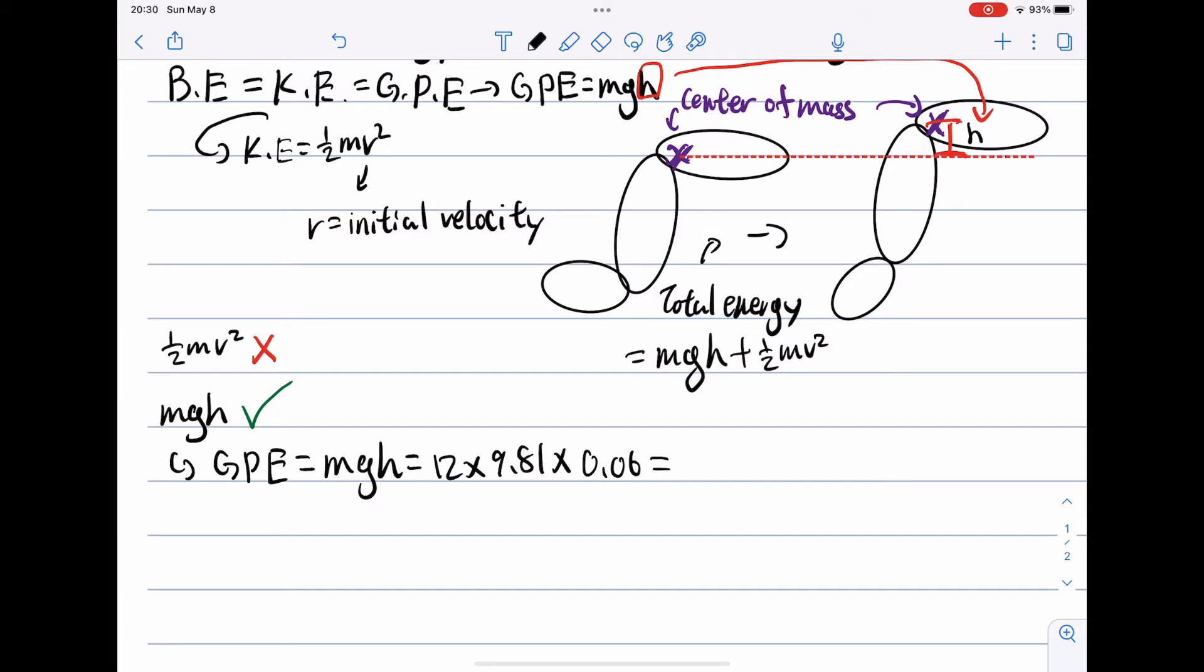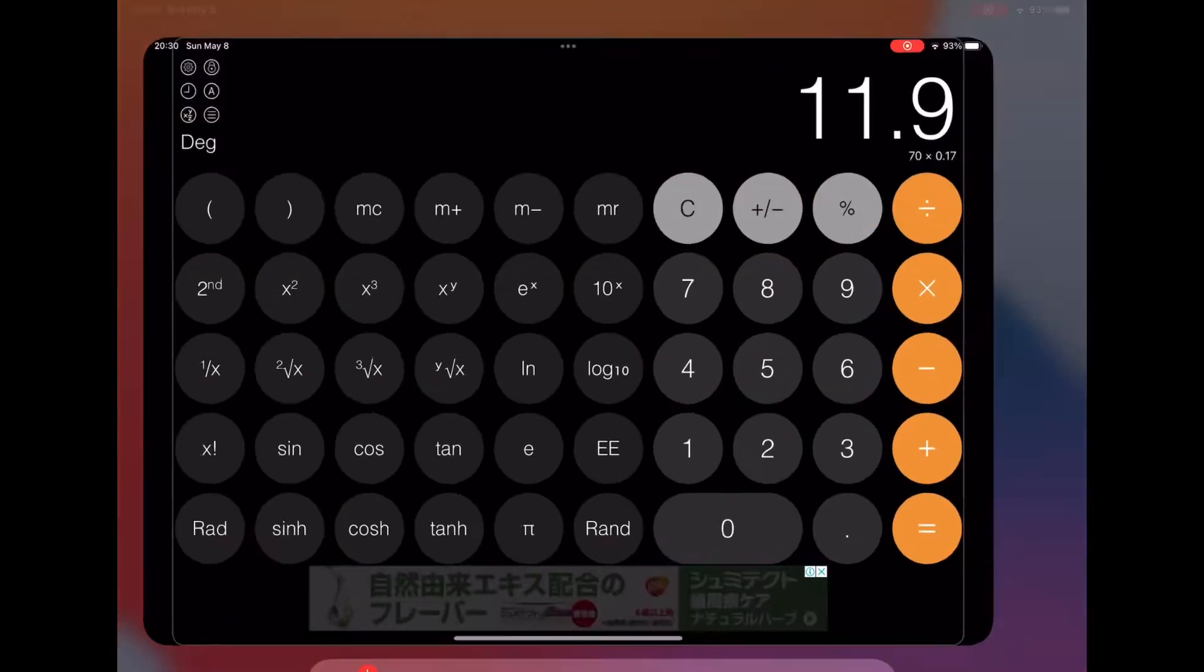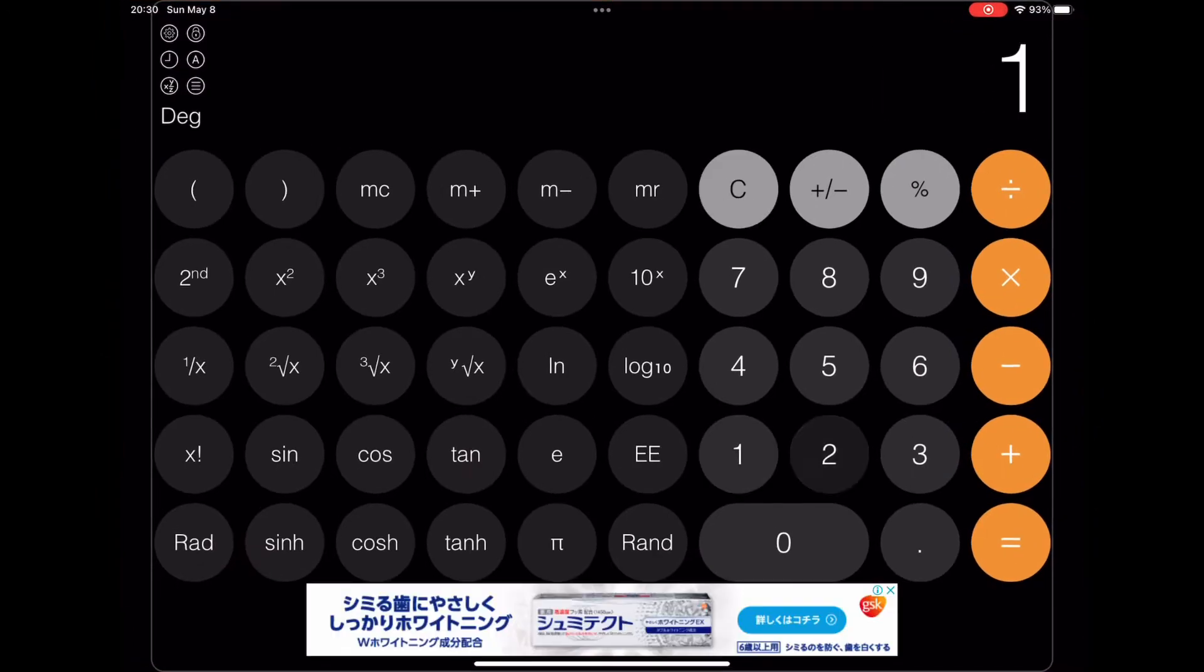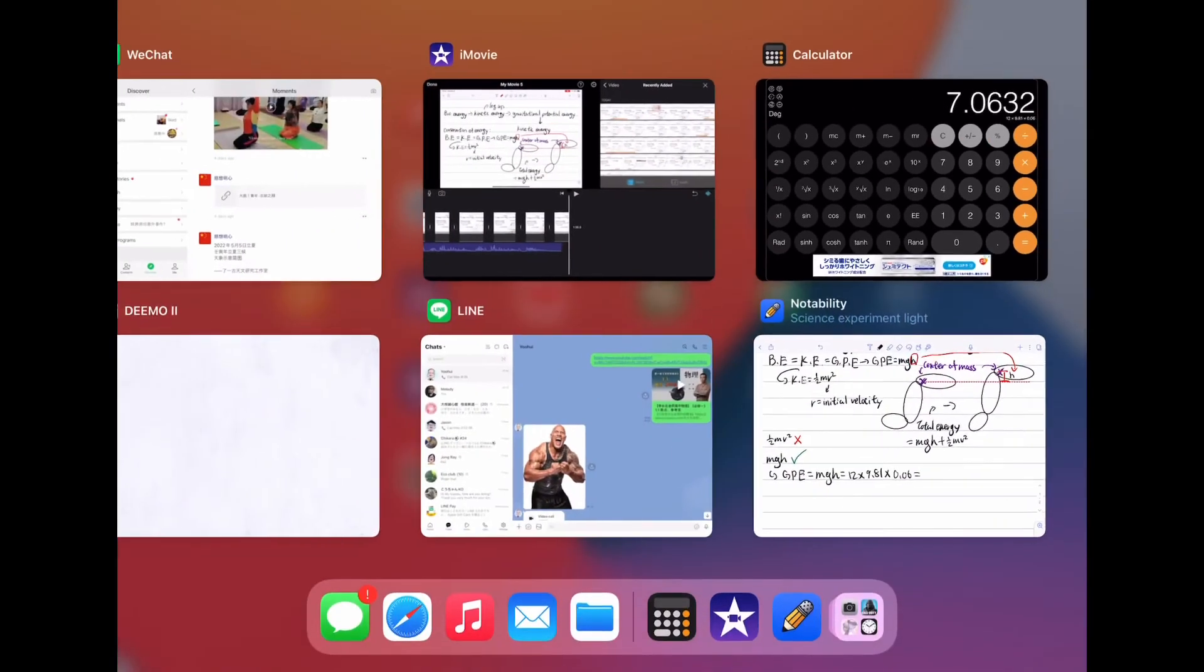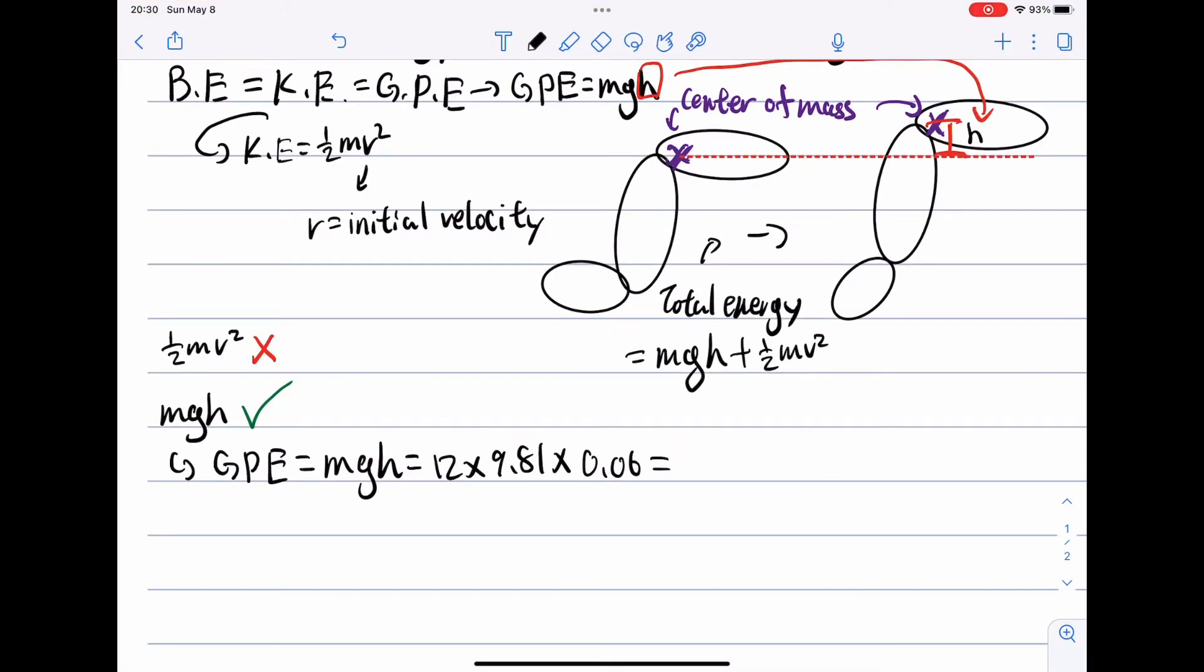The gravitational field strength would be taken as 9.81, therefore the energy cost is 7.0632 joules per shake.